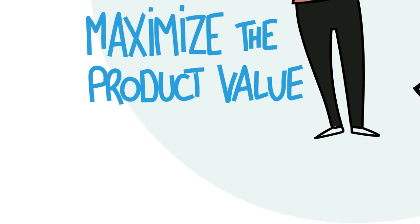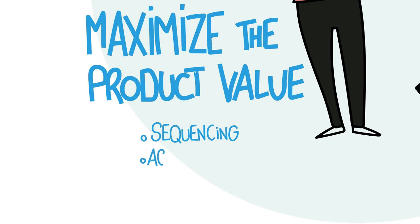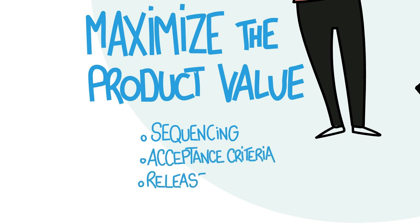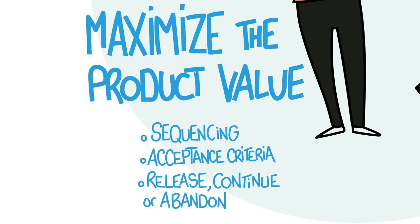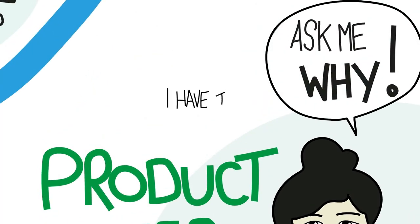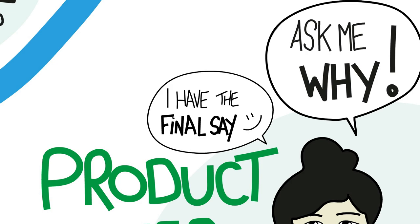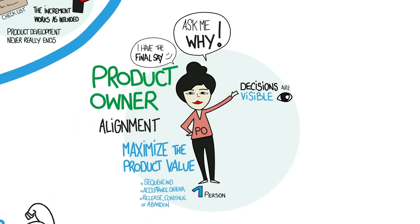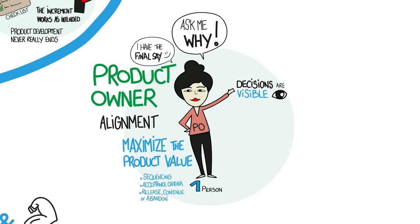These decisions include sequencing, acceptance criteria, and whether to release the product, continue development, or even abandon the effort. The product owner can decide what will be done first and can have final say both on the definition of acceptance criteria and whether an item is done. Since each increment is really done, whether to release, continue, or abandon becomes a business decision.